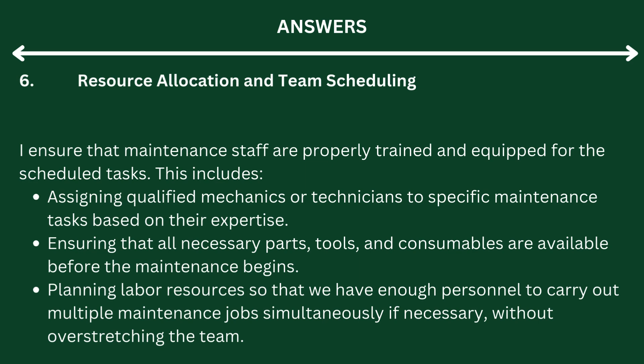Step 6: Resource Allocation and Team Scheduling. I ensure that maintenance staff are properly trained and equipped for the scheduled tasks. This includes assigning qualified mechanics or technicians to specific maintenance tasks based on their expertise, ensuring that all necessary parts, tools, and consumables are available before maintenance begins, and planning labor resources so that we have enough personnel to carry out multiple maintenance jobs simultaneously if necessary, without overstretching the team.